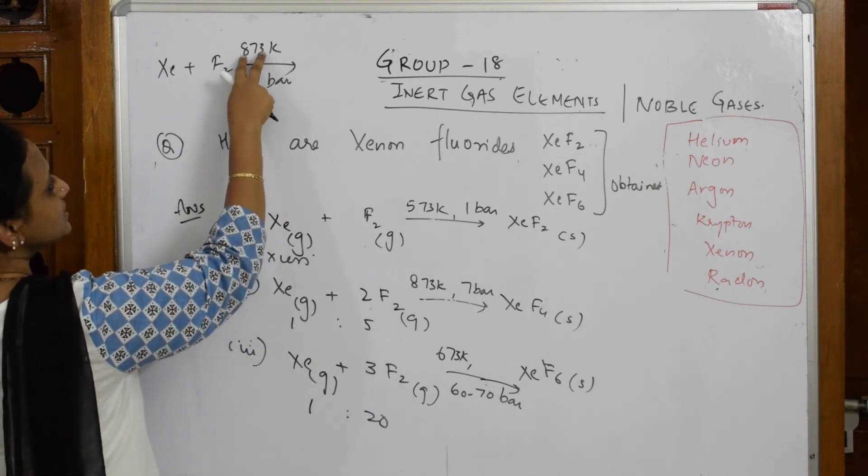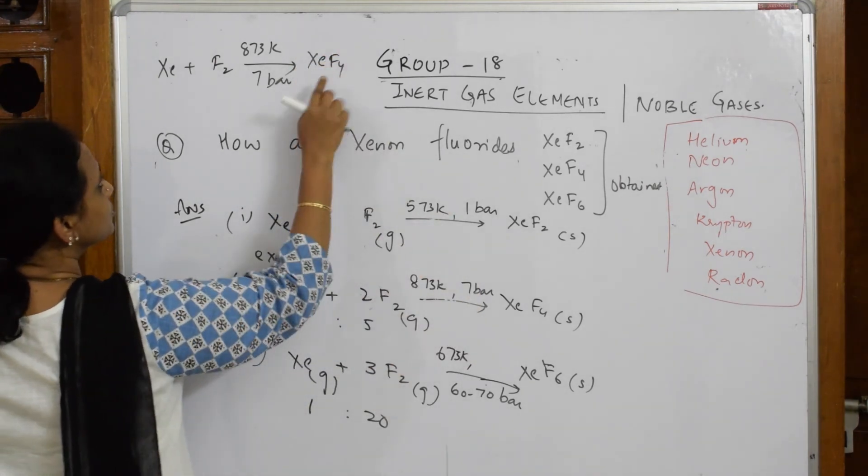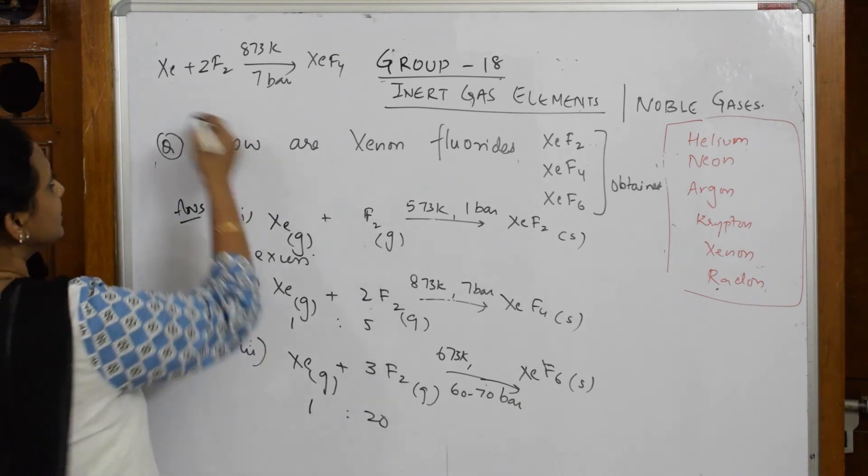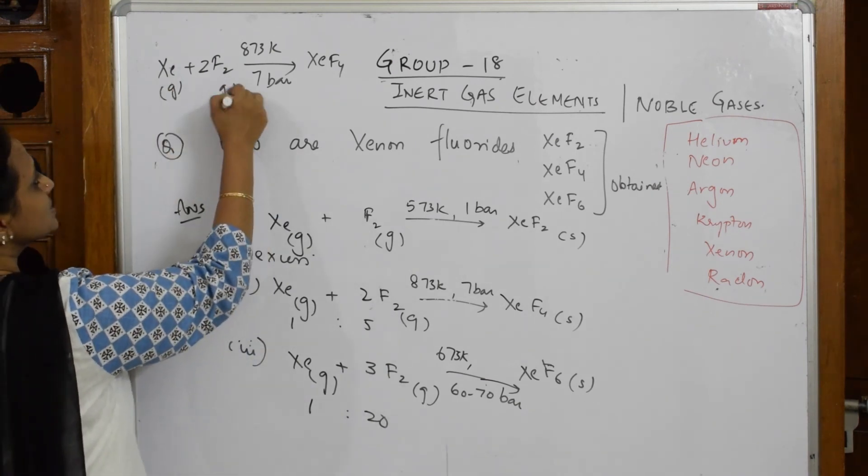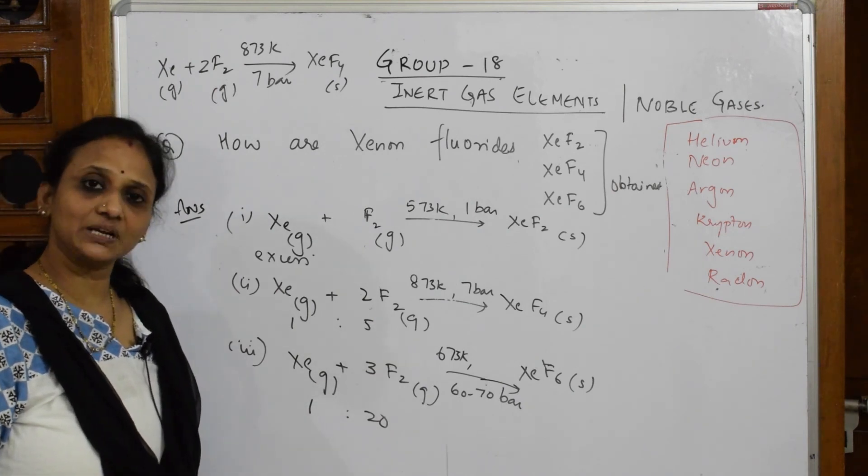So for 4 I need 2, and you balance the reaction. Finally write this is gaseous state, this is gaseous, and this is solid. For that we are going to mention the temperature and pressure.